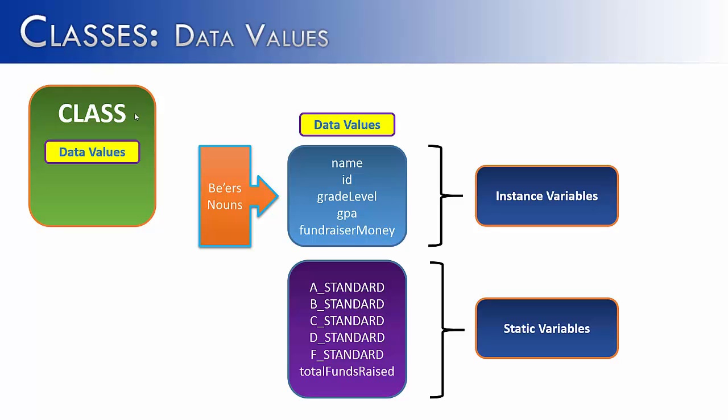Now why is A_STANDARD capitalized and total funds raised not capitalized? Well because anytime you see an all caps value it should indicate to you that it's a constant, meaning it does not change. So Billy has to make a 90, Sally has to make a 90, Jose has to make a 90, and they cannot change the values in order to change what they have to get in order to make an A. Whereas the bottom static value total funds raised, it can be changed but it's still true for all members. If I had a new student come in named Jimmy and Jimmy raised an extra $20 and so we already have $150, the value would be changed to $170. Some static variables can be changed, others cannot if they are constant.